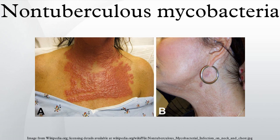Epidemiology: NTM are widely distributed in the environment, particularly in wet soil, marshland, streams, rivers, and estuaries. Different species of NTM prefer different types of environment. Human disease is believed to be acquired from environmental exposures, and unlike tuberculosis and leprosy, there has been no evidence of animal-to-human or human-to-human transmission of NTM, hence the alternative label environmental bacteria.